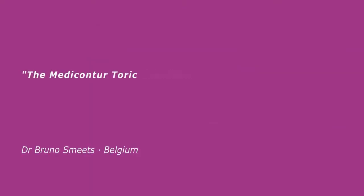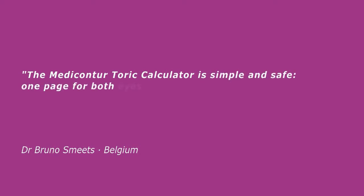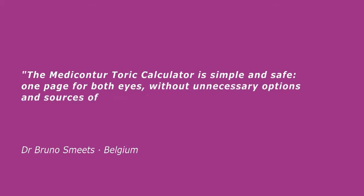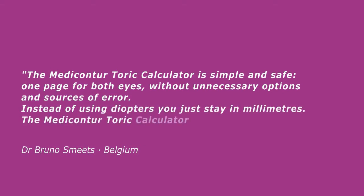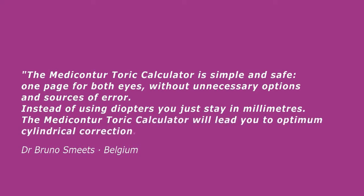I really appreciate the Metacontour toric calculator. It's simple and safe — one page for both eyes without unnecessary options and sources of error. No need to care about Java or other indices. Instead of using diopters, you just stay in millimeters. Provided you complete a precise keratometry in the first place, the Metacontour toric calculator will lead you to optimum cylindrical corrections.